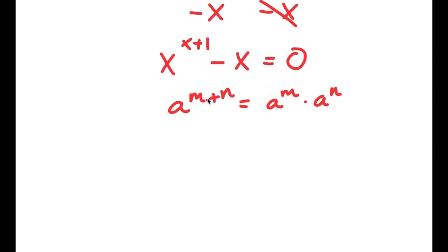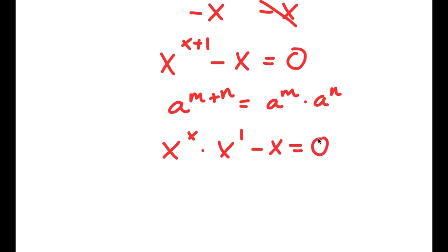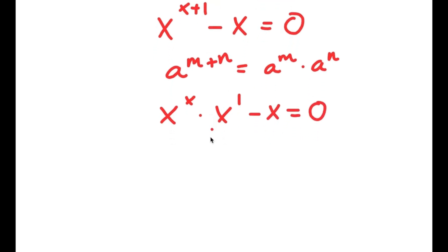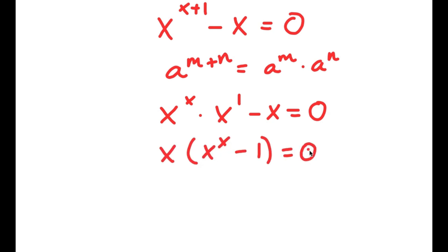Now, x to the power of x plus 1 can be rewritten using the rule a to the power of m times a to the power of n: so x to the power of x plus 1 equals x to the power of x times x to the power of 1. I now have x to the power of x times x minus x equals 0, and if I factor out x, I get x times x to the power of x minus 1 equals 0.